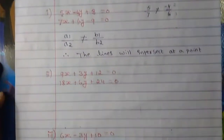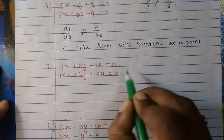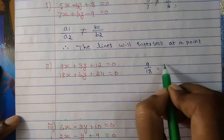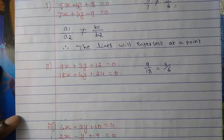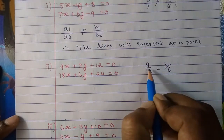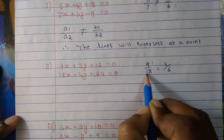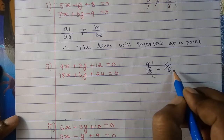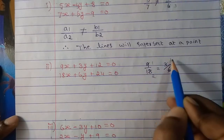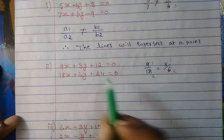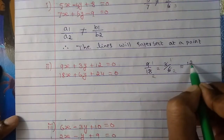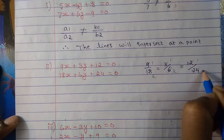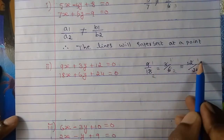Now let's do the second one. Let's compare and see — this is 9 upon 18, and this is 3 upon 6. If you divide by 9, you get 1 upon 2, and dividing 3 upon 6 by 3 also gives 1 upon 2. Now let's compare the third one — 12 upon 24. Dividing by 12, that also gives 1 upon 2. So we see 1 upon 2, 1 upon 2, 1 upon 2.